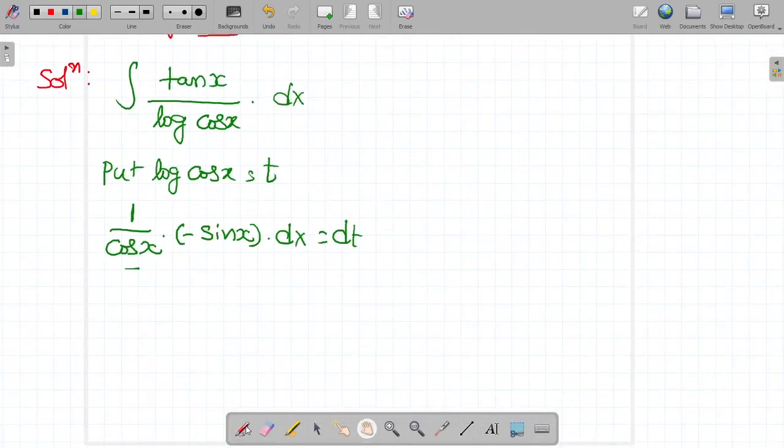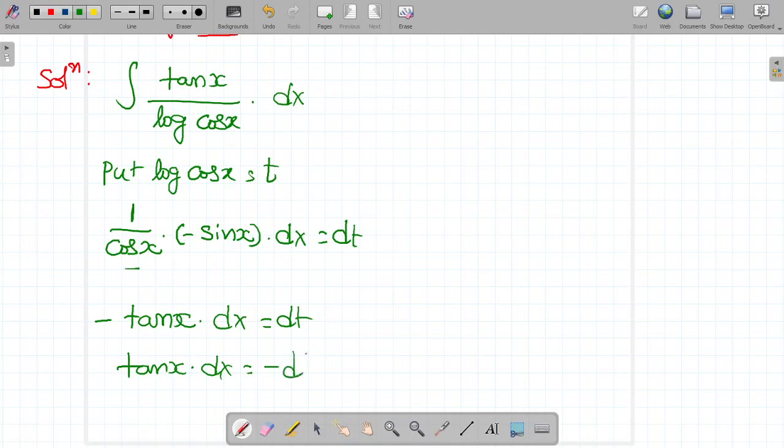So sin x by cos x is minus tan x dx equal to dt. So tan x dx is equal to minus dt.